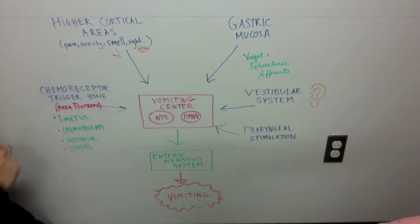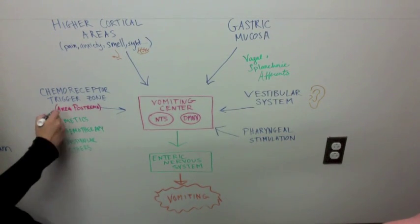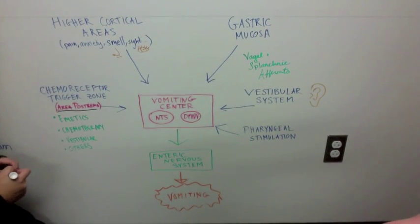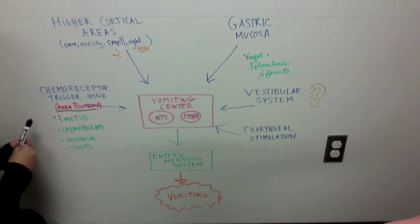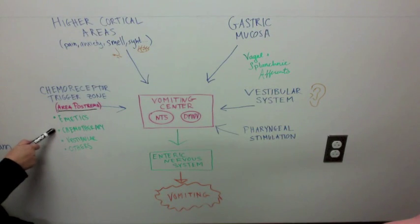Another area that affects the vomiting center is the area postrema, located at the base of the fourth ventricle. The area postrema is activated by emetics, chemotherapy, radiation, and vestibular stimulation, among others.